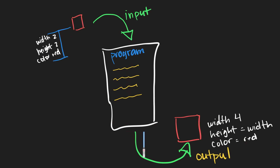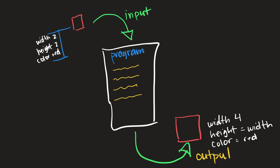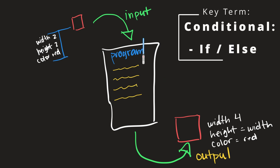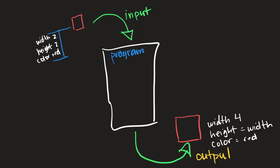Now with an understanding of how our program works step by step, let's get into how we actually control the flow of data through our application. We can alter the flow of data based on conditions. For example, our program is making the square larger, but maybe we only want to make red squares larger and blue squares smaller. So we'd have a line that says something like: if square is red, and under that we'd say what to do.